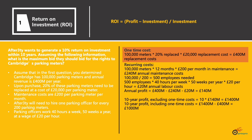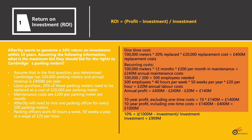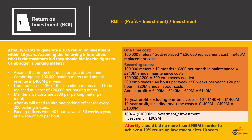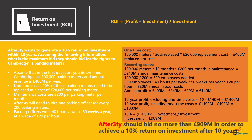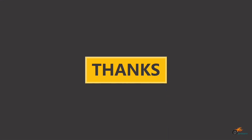After calculating these three costs, we determine the 10-year profit excluding the one-time costs and the 10-year profit including the one-time costs. We then plug all the numbers into the formula, which gives us an investment figure of £909 million. The conclusion is that the after 30 should bid no more than £909 million to achieve a 10% return on investment after 10 years. I hope you find this video helpful — cheers!